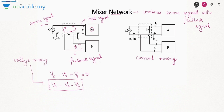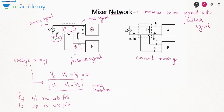When voltages are added or subtracted, it is a series connection. In series connection, resistance increases, so Rif (input resistance with feedback) is greater than Ri (input resistance without feedback). In the second case, Ii is the input current, Is is the source current, and If is the feedback current. Applying KCL: Is − If = Ii. To obtain the input current, we subtract source and feedback current — this is current mixing.